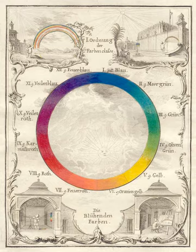In reality, only imaginary 'primary colors' used in colorimetry can 'mix' or quantify all visible colors, but to do this, these imaginary primaries are defined as lying outside the range of visible colors — i.e., they cannot be seen. Any three real 'primary' colors of light, paint or ink can mix only a limited range of colors, called a gamut, which is always smaller than the full range of colors humans can perceive.